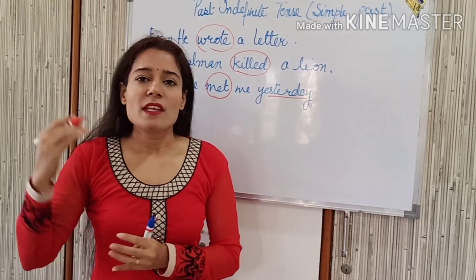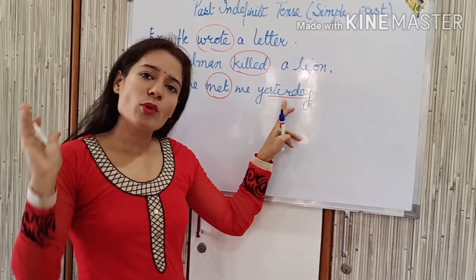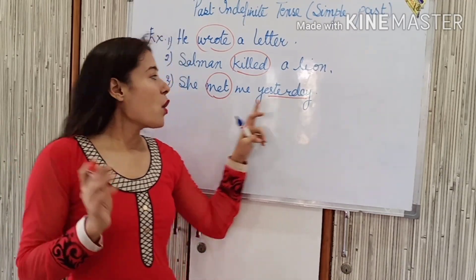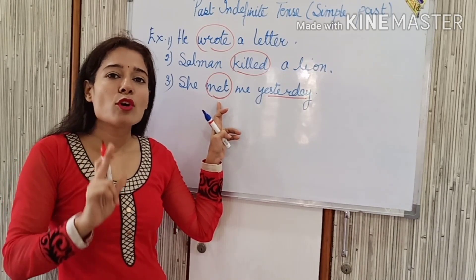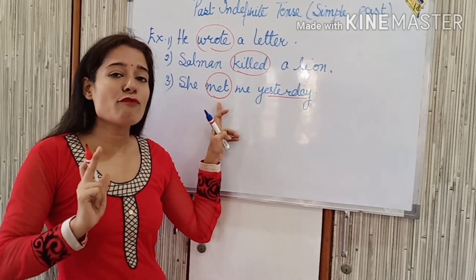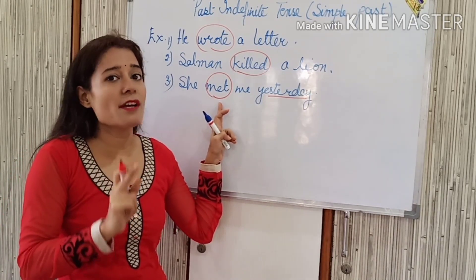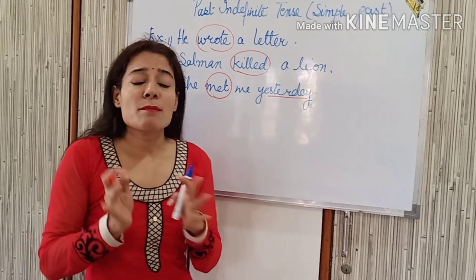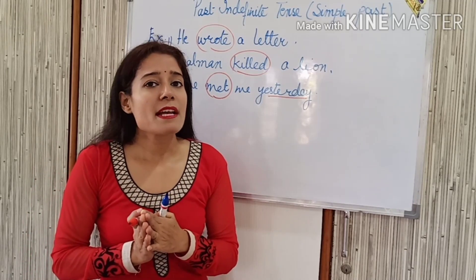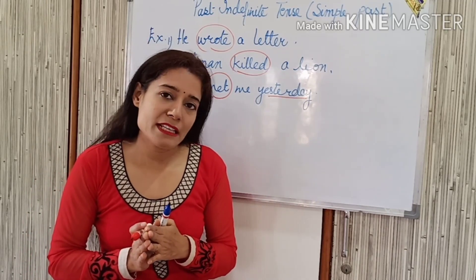So if there are past time showing words, it will be easier for us. We know that this is the old thing — yesterday is the old thing. And we look at the second form of verb. This is how we identify simple past or past indefinite tense.